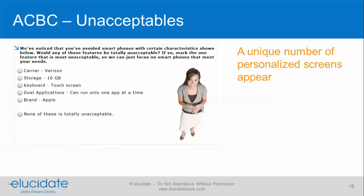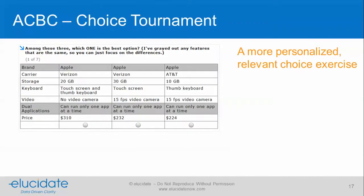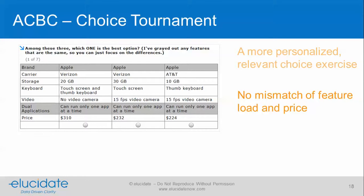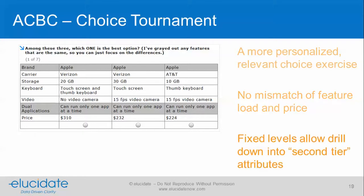A unique number of personalized screens appear depending on the behavior of the respondent. Finally we end up at a choice tournament, which is a more personalized, relevant choice exercise than we get in CBC. We have no mismatch of feature load and price, and we fix some levels to allow drill-down in the second-tier attributes. Respondents always have a tendency to simplify choice exercises — they attend to their top attributes. But in ACBC we've learned what their top things are previously, so we can fix those and force respondents to give us information about a second tier of attributes. As researchers we get more information.